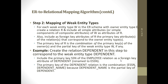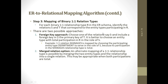For a weak entity, we should create a table and the primary key of the strong entity has to be included in the weak entity as a foreign key. The primary key of the weak entity will be the combination of the primary key of the strong entity set and the partial key of the weak entity set.